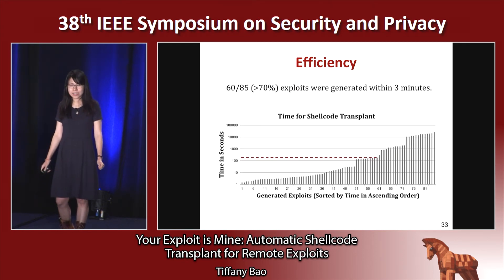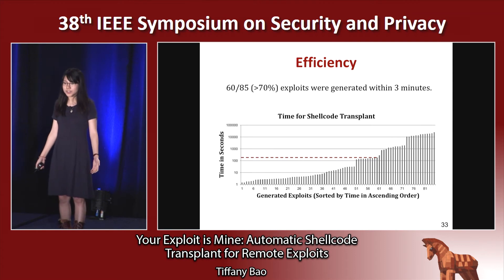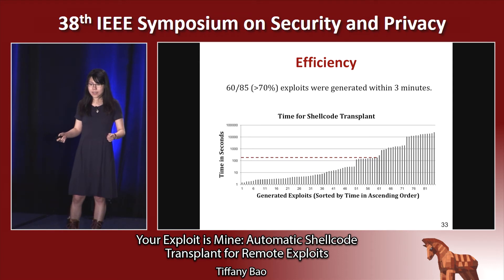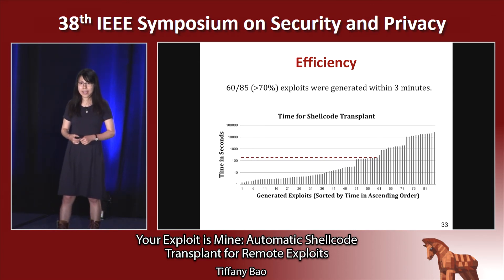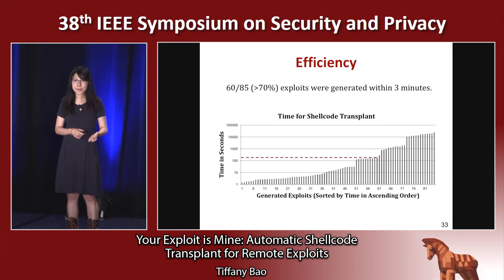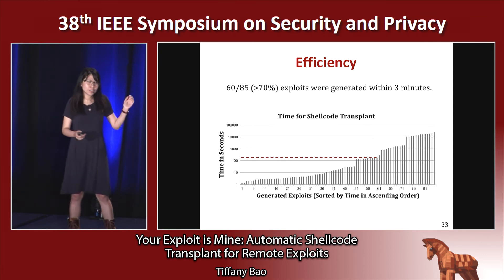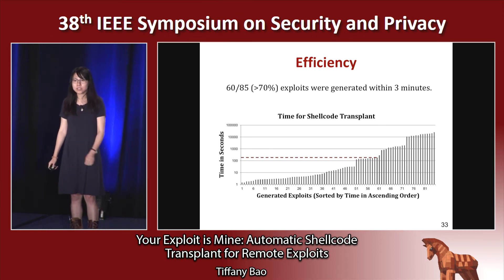We also evaluated ShellSwap in terms of performance for generating those new exploits, shown in this chart. The x-axis shows exploits sorted by time in ascending order, and the y-axis is the time spent in seconds on a logarithmic scale. For all exploits, more than 70% can be generated within three minutes. This means if you spend three minutes — get a coffee, tea, whatever — when you come back, you get a new exploit. And this is much faster than human analysis.